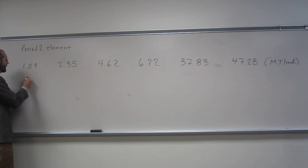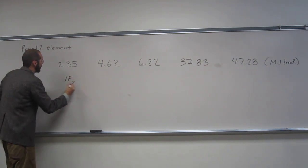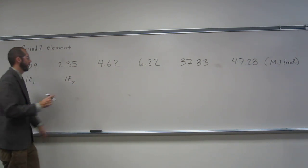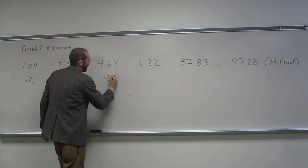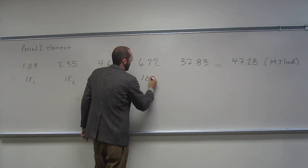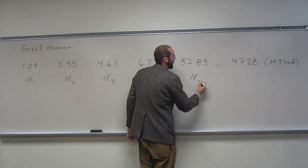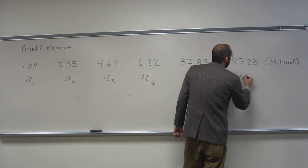Remember, this is ionization energy 1, ionization energy 2. This is how much does it take to take the first electron off, second electron off, third electron off. Ionization energy 4, ionization energy 5, ionization energy 6.